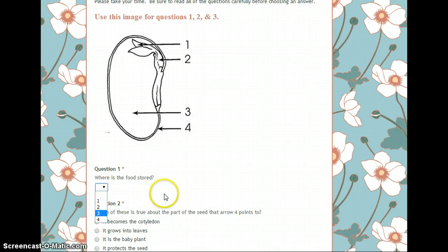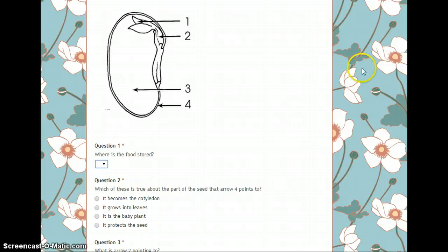Question 2: Which of these is true about the part of the seed that arrow 4 points to? That is this thin outer layer. It becomes the cotyledon. It grows into leaves. It is the baby plant. It protects the seed. Choose your best answer choice.